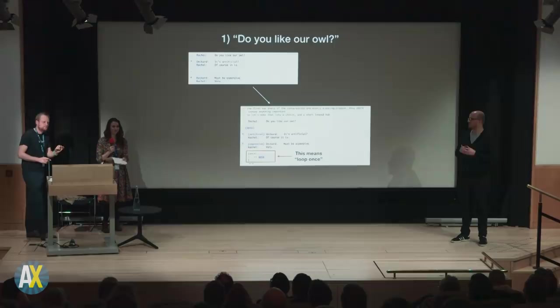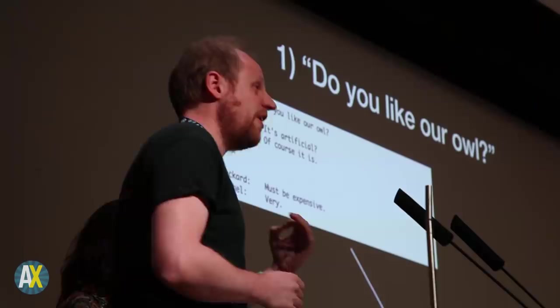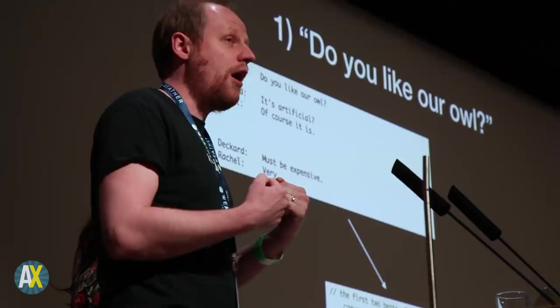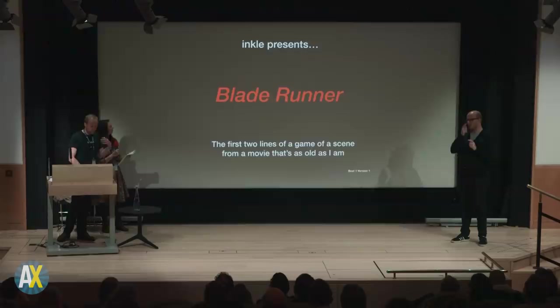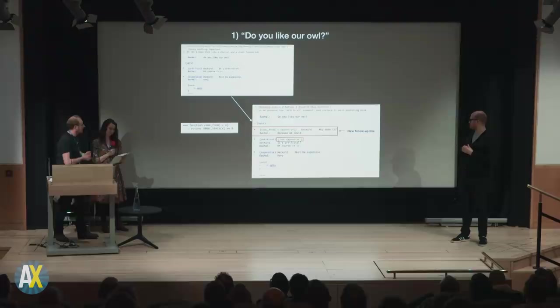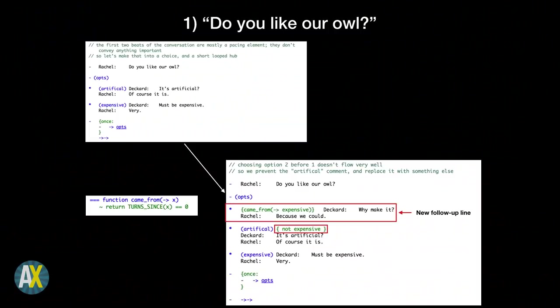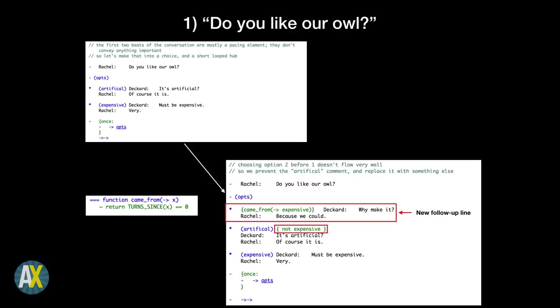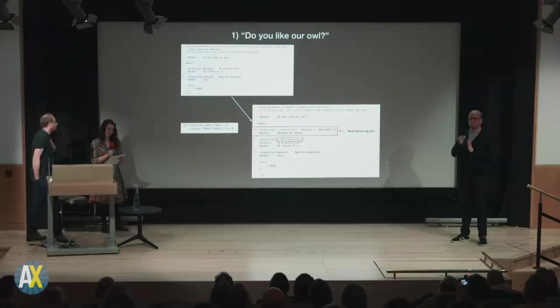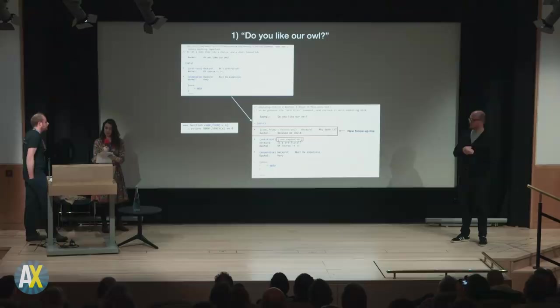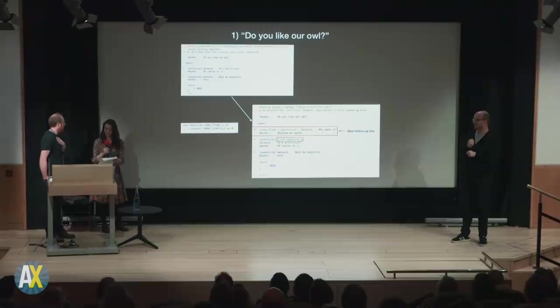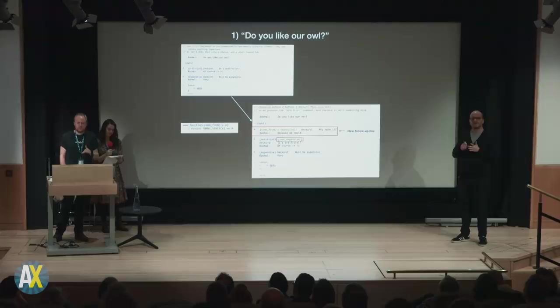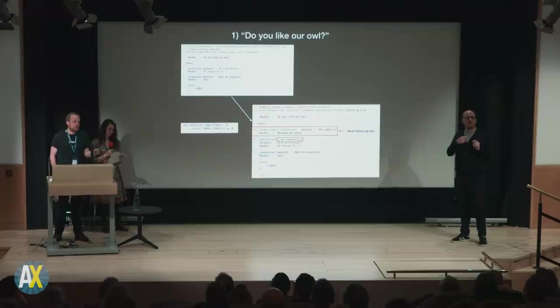What we're going to do: first, if we've made the comment about being expensive, we're not allowed to make the comment about being artificial the second time around the loop. But when we have done that, if we say it in the right order, I'm going to bring in a new choice. That first choice — 'why make it?' — it's not a great line of dialogue but it'll do. Let's run it. Do you like our owl? It must be expensive. Very. So why make it? Because we could. Not brilliant writing, but it delivers the point. We escalated — we got to Rachel saying 'I'm better than you,' which is what we required. Later we can find better phrasing, but right now we want the structure.